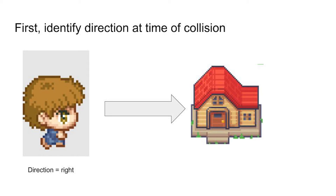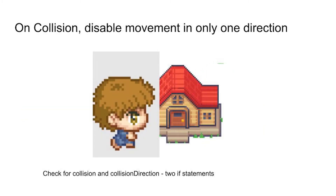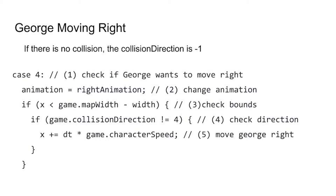The solution is to first identify the direction that George is headed in at the time of collision. If we know the direction at the time of collision, we can save that direction in a variable called collision direction. Then we can have two if statements: one to check for a collision, and the other to check if the collision direction matches the direction the character wants to move in. When we check for a collision, if there's no collision, we set the collision direction to minus one.